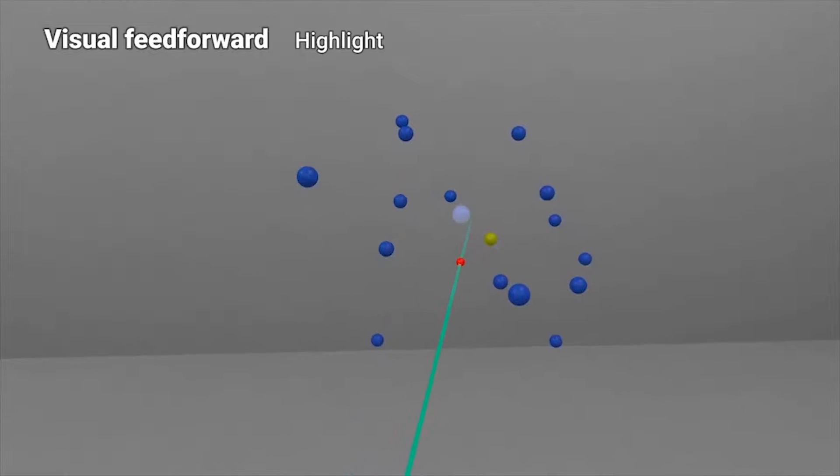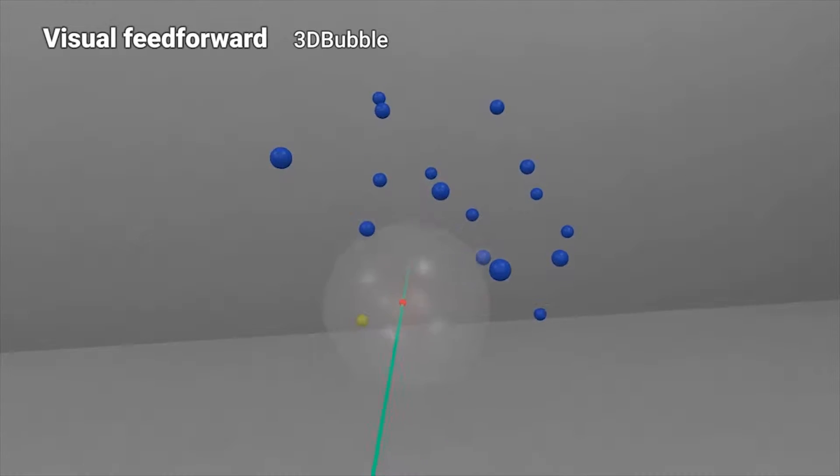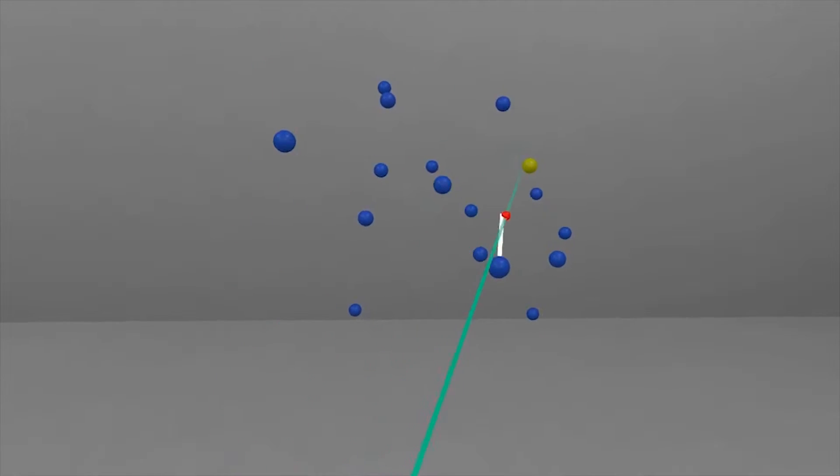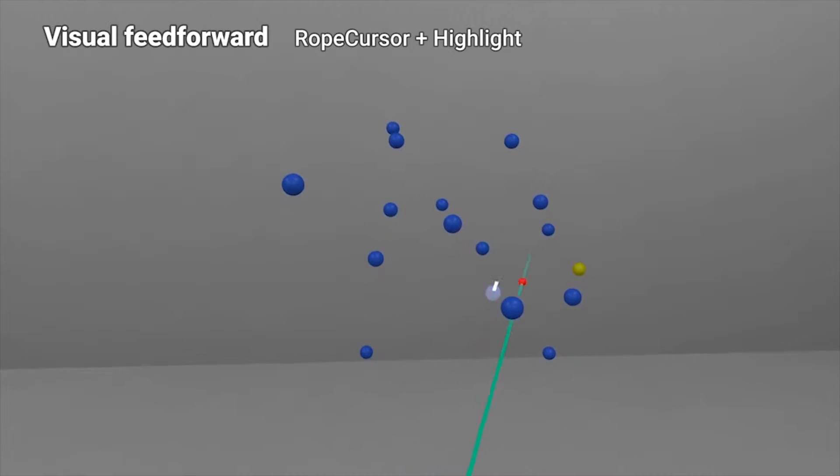We compare different visual feedforward methods showing the nearest target: highlighting, 3D bubble, rope cursor, and some combinations of them.